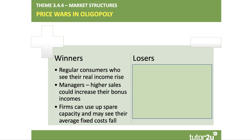In a price war, regular customers are better off because prices have fallen and their real incomes effectively rise. Managers might benefit if higher sales volume increases their revenue-linked bonuses. Firms can also use up spare capacity — if demand is low, a price war means selling more volume, and since many costs are fixed, the fixed cost per unit comes down. For example, if Walker's Crisps has a £10 million advertising budget and doubles its sales from 100 million to 200 million packs, the marketing cost per packet halves.